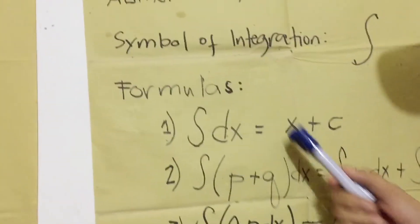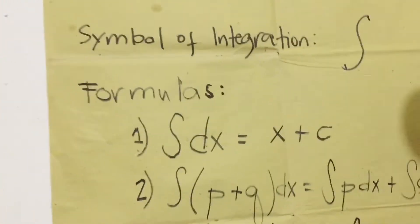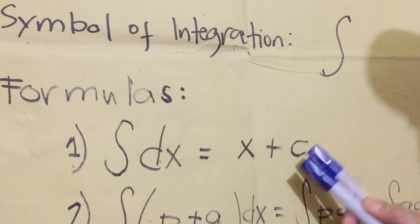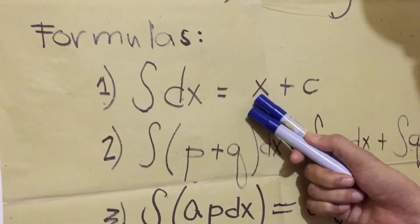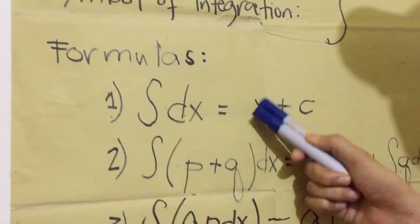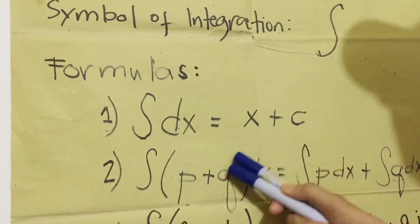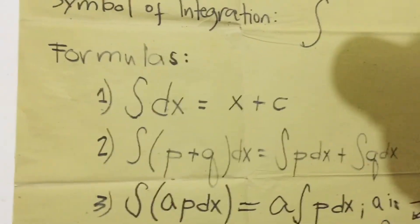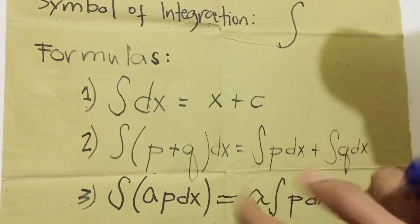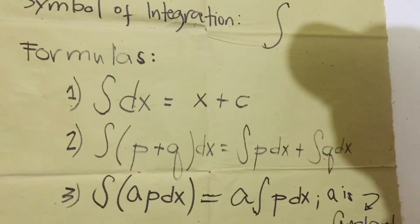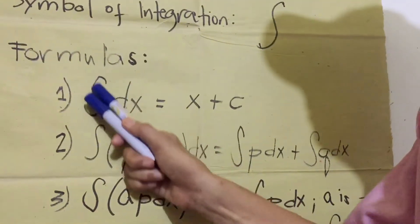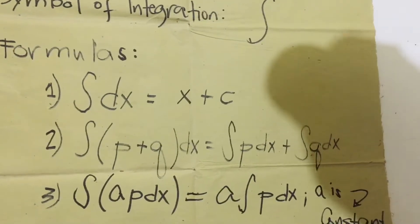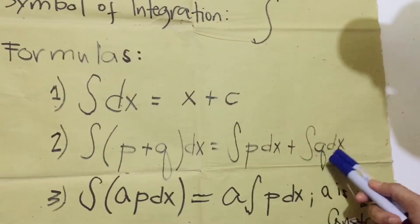To solve the problem in integration, we have to use the formulas. The first formula, integral dx is equal to x plus c. Any variable we can use this. The constant is the value of dx. In the time of our process in computing integration, if we encounter integral dx, the value is x plus c.